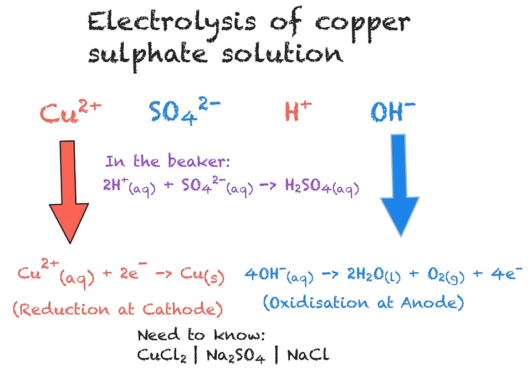It is important to note that the electrolysis we've looked at so far has been using neutral carbon graphite electrodes. In the next video, C3.6, we will look at how we can use different metal electrodes in order to carry out purification or to carry out electroplating.